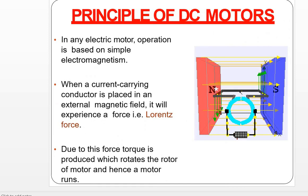So what is the principle? If you look at the diagram on the right-hand side, you will see a current-carrying coil placed in a permanent magnet. The magnetic lines of force go from north to south, producing magnetic flux. When a current-carrying conductor is placed in an external magnetic field, it experiences a force — called the Lorentz force — which rotates it, producing mechanical energy from the electrical energy supplied.